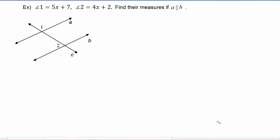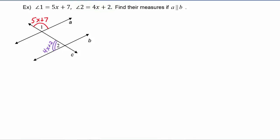Now let's take a look at this example. We're given that angle 1 is equal to 5x plus 7, so let's mark that in our picture. We're also told that angle 2 is 4x plus 2, so we can mark that as well. Further, we're given that line A is parallel to line B, so we can mark that in the picture.